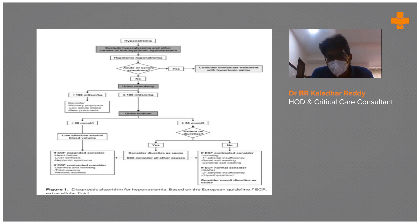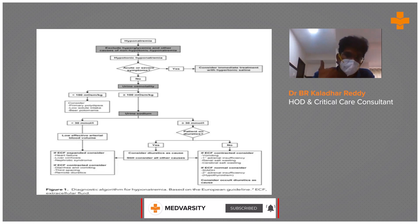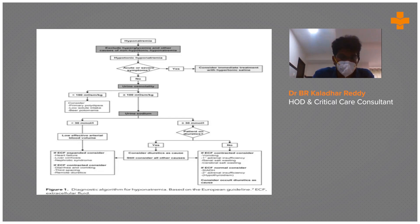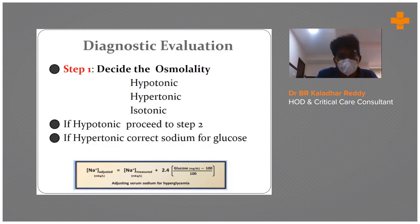If urine sodium is less than 30, that means sodium is being lost from places other than the urine — such as third-space losses like cirrhosis, heart failure, renal failure, or GI losses like vomiting and diarrhea. If urine sodium is more than 30, the patient is losing sodium through the urine, so consider diuretics or secondary adrenal insufficiency.